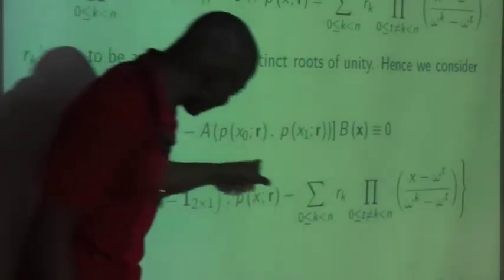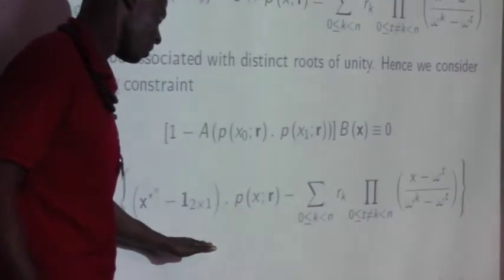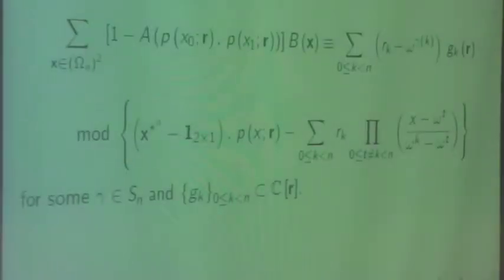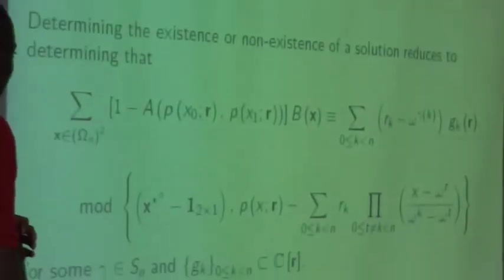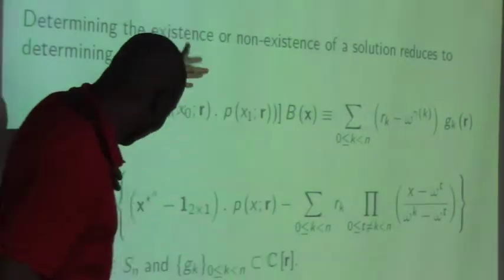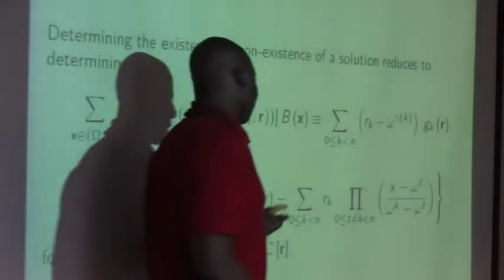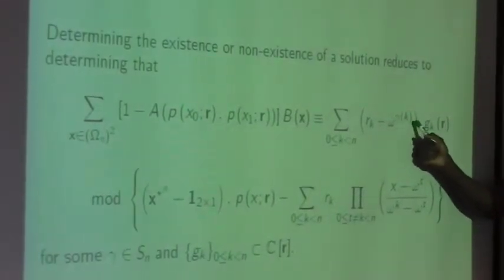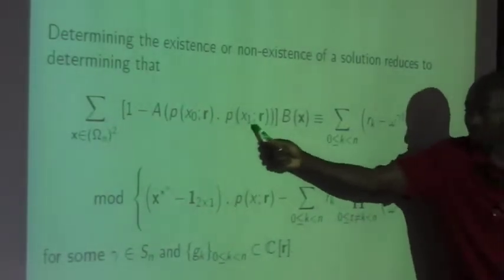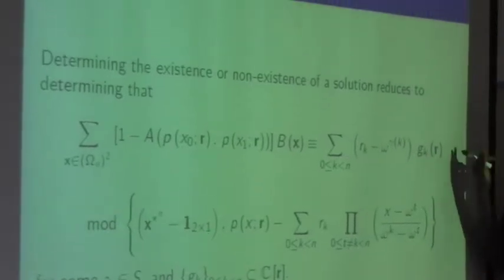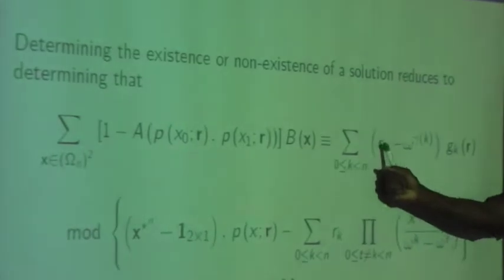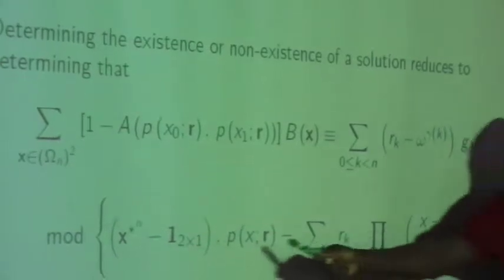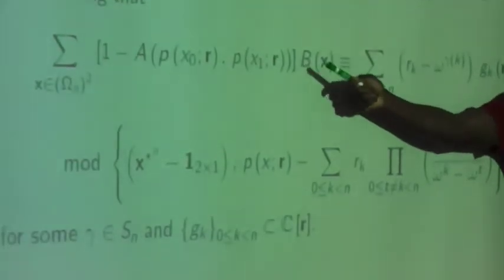What we want to solve is: we want to check that this expression is zero modulo these constraints, using Euclidean division. If we expand out this polynomial respecting these constraints, and the polynomial equals R_K minus W_sigma_K — where gamma_K is a permutation of the roots of unity — this is a certificate of existence of a solution. Plugging in B's permutation of the roots of unity gives zero. So all we need is Euclidean division and checking that the polynomial has this form.